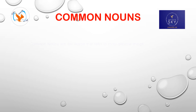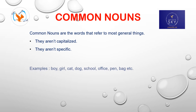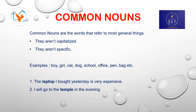Common nouns are words that refer to the most general things. They aren't capitalized and they aren't specific. Some examples of common nouns are: Boy, Girl, Cat, Dog, School, Office, Pen, Bag, etc. Let's learn them with the help of sentences: 'The laptop I bought yesterday is very expensive.' 'I will go to the temple in the evening.' 'My mother is a very good cook.' Common nouns examples are written in bold for easy identification.